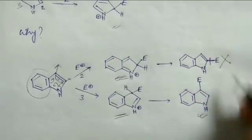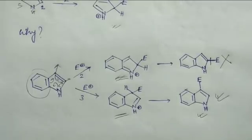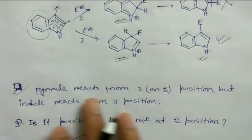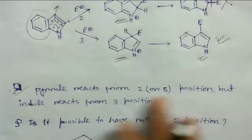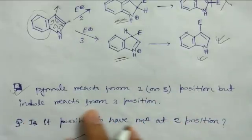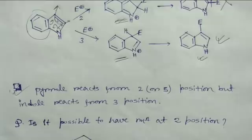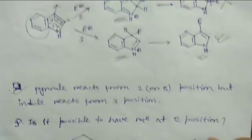So the reaction always goes from the 3-position in indole — you will not get 2-substitution; instead you will always get 3-substitution. This is a thumb rule: pyrrole reacts from the 2 or 5 position, but indole always reacts from the 3-position. Keep this in mind when writing any reaction of indole.